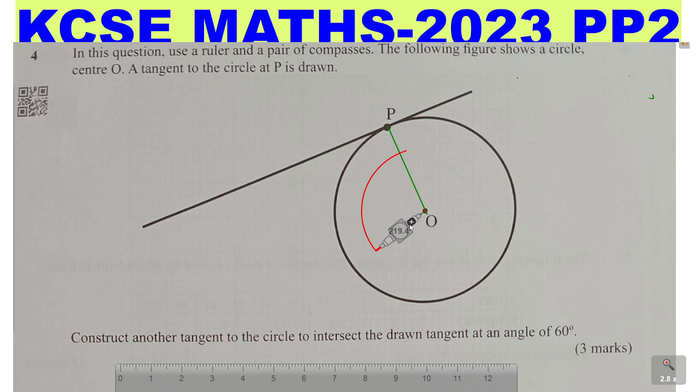Mark an arc like that. Then with the same radius without changing anything, stand at this point and at that arc. So that is how we construct 60 degrees.